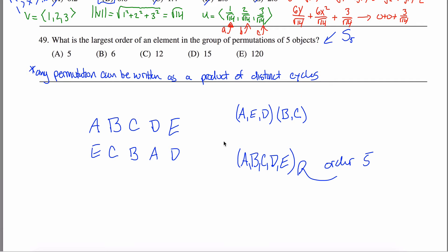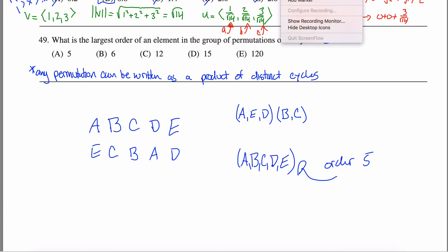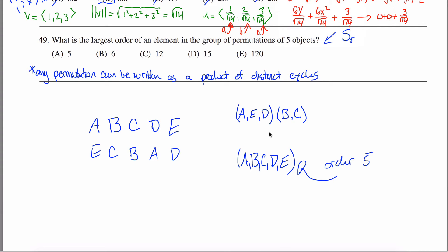Think about how you can partition the five elements into distinct cycles. You could have a 3-cycle and a 2-cycle, or a 4-cycle with one element left fixed, among other options.